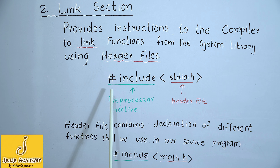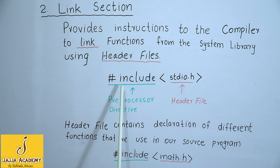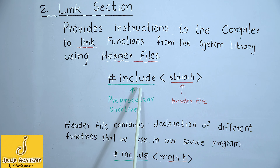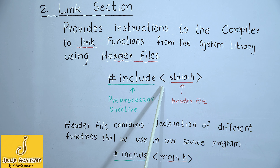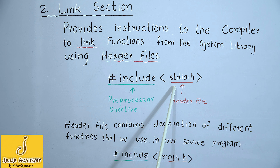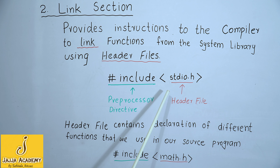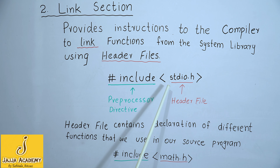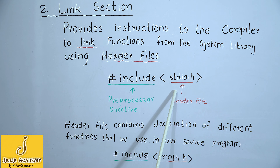Header files are always included in our source program by using the preprocessor directive include. A preprocessor directive starts with the hash symbol, then we write the name of the preprocessor directive, which is include here. This include preprocessor directive includes the header file written in the angle brackets, which is stdio.h. Including a header file into our program is just like copying the contents of the header file into our source program.